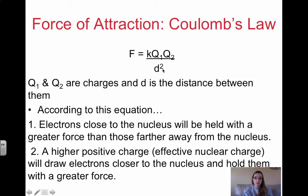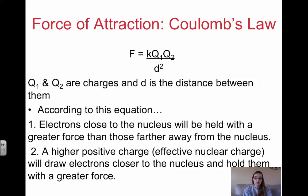Electrons close to the nucleus are held tighter. A higher positive charge — which is effective nuclear charge, something we'll talk about later — will draw the electrons closer to the nucleus and hold them with a greater force. So the higher the positive charge, the stronger the force pulling the electrons in toward the nucleus.